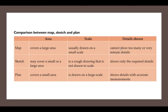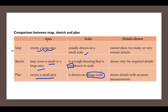Now the difference between a map, sketch, and plan: in terms of area, a map covers a large area; a sketch covers a very small or large area because it is a rough drawing; and a plan covers only a small area. In terms of scale, a map is small scale because the information is limited. A sketch is not drawn to scale as it is a rough drawing. A plan is large scale because it contains all detailed information.